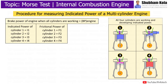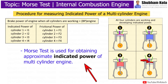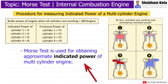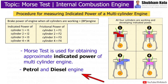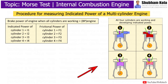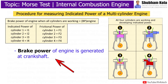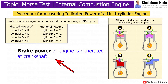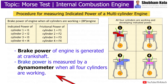In this video, we are going to learn about the Morse test, used for obtaining approximate indicated power of a multi-cylinder engine. This method is used for petrol and diesel engines. In this test, the engine is first allowed to run at constant speed, and the brake power of the engine is generated at the crankshaft at a certain load and speed, and it is measured by a dynamometer when all four cylinders are working.